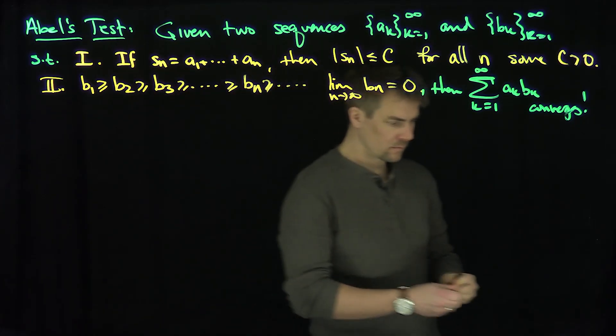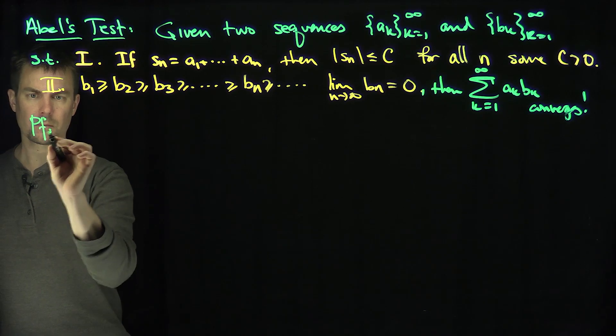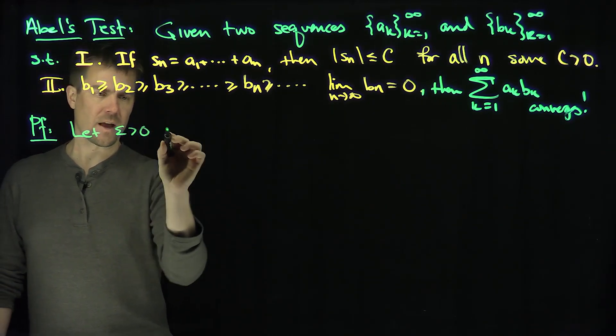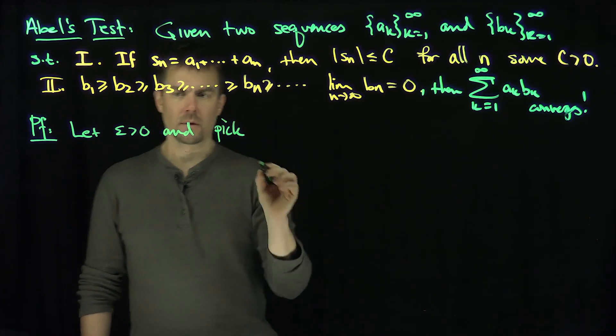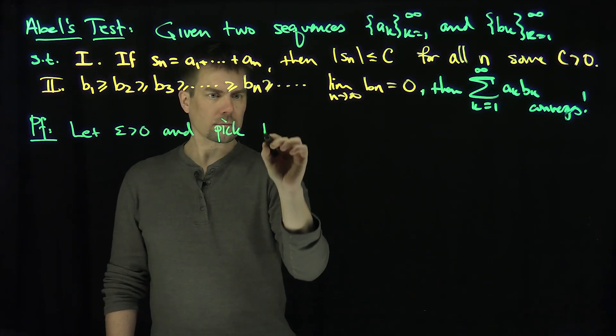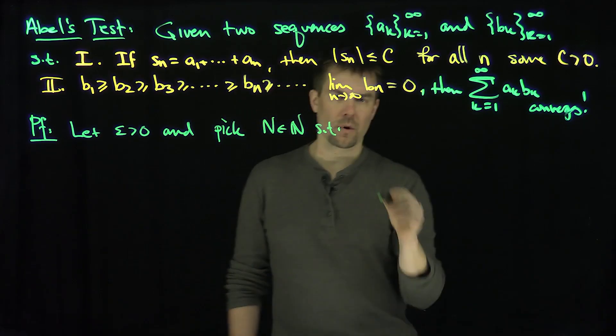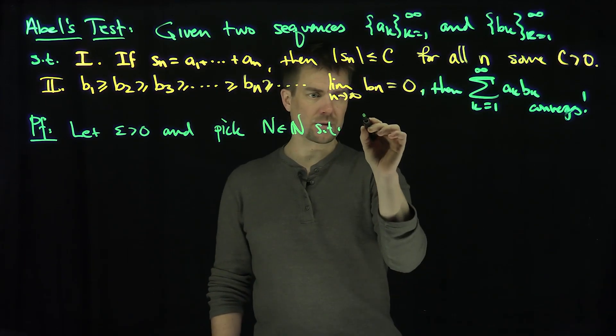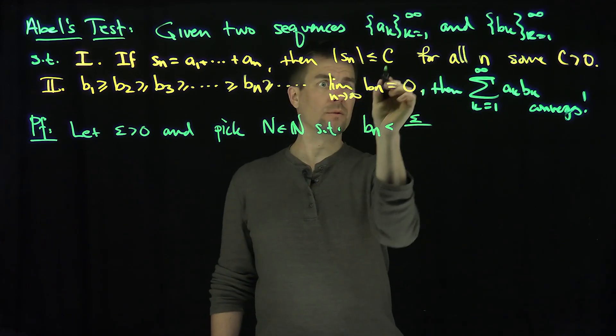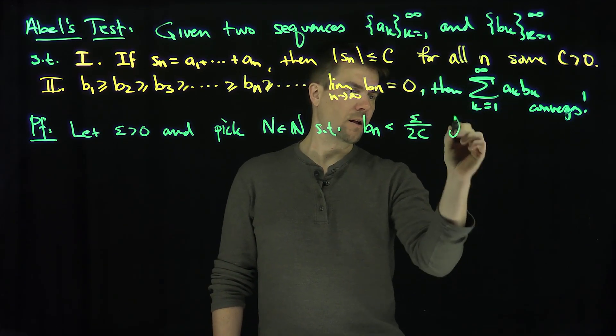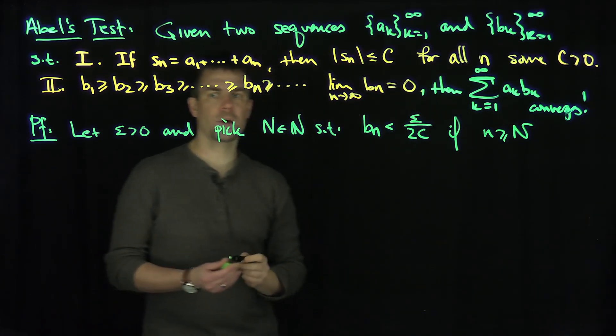Here's the proof. Let epsilon be greater than zero and pick N such that b_n is less than epsilon over 2c if n is bigger than or equal to N.